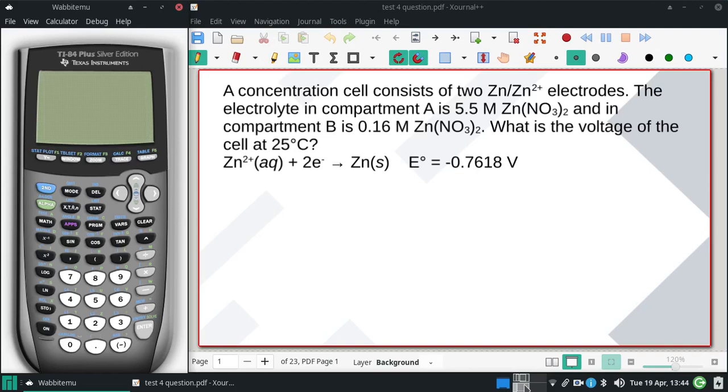A concentration cell consists of two zinc electrodes, zinc to zinc plus two. The electrolyte in compartment A is 5.5 molar, and in compartment B is 0.16 molar, both zinc nitrate. What is the voltage of the cell?